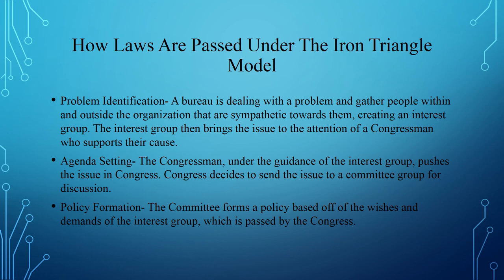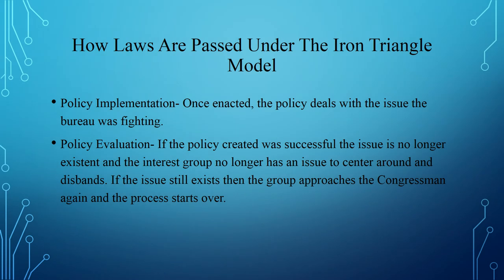The interest group tells the committee what they want and how they want it, and the committee tries to pass a policy that follows their guidelines. Once a policy the interest group approves of has been passed, it's time for implementation. This policy should deal directly with the issue the bureau was fighting. Once the policy has been in place for a while, it can be evaluated. If successful, the interest group no longer has a cause and can disband. However, if the issue isn't resolved, the group can re-approach the policy maker and the process starts over.